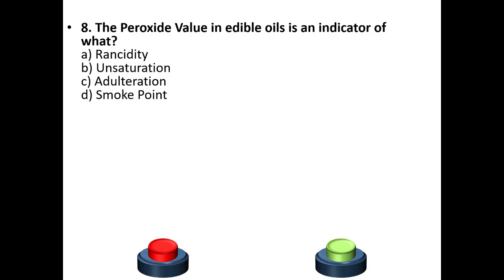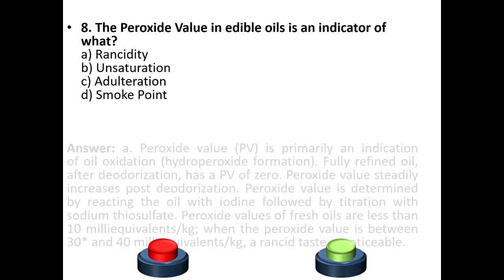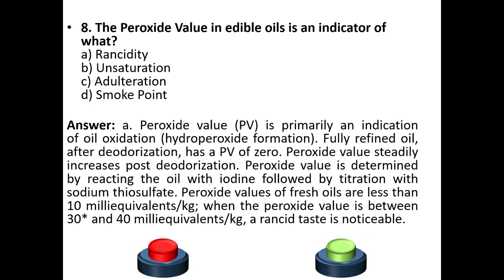Eighth question: The peroxide value in edible oils is an indicator of — A. Rancidity, B. Unsaturation, C. Adulteration, D. Smoke point. Your answer is option A: Rancidity.